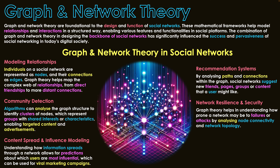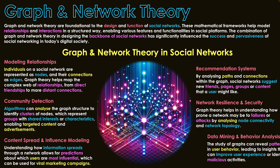The next area is network resilience and security. Graph theory helps understand where the network may be prone to failures or potential attacks by analyzing node connectivity and network topology — identifying where there might be flaws or openings. By mapping things out, we can see where issues have occurred in other platforms or systems, and if a user has been doing suspicious activity, we can identify who they're connected to and which immediate users around them may be affected if their account was hacked.